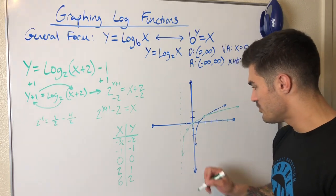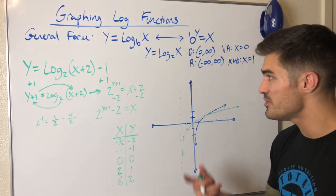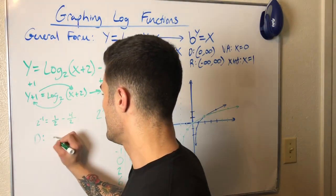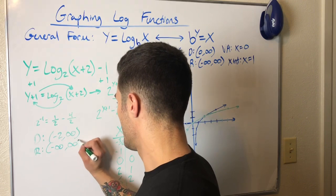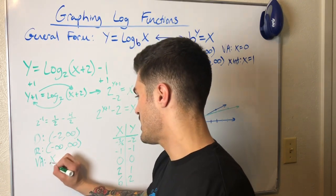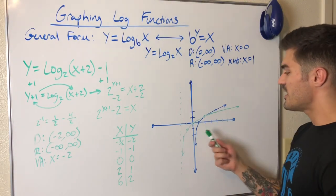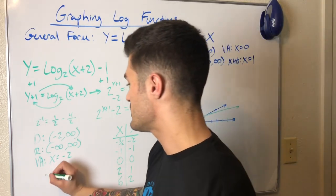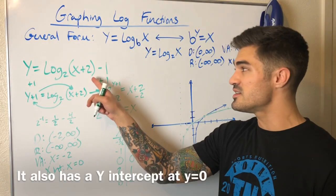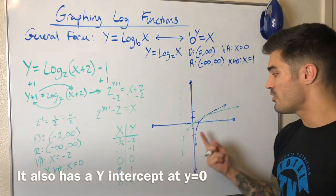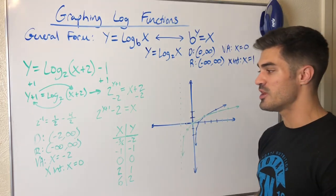Let's write out the key information for this function. The domain has changed: instead of zero to infinity, it's now negative two to infinity, because of the horizontal shift. The range is still negative infinity to positive infinity — that hasn't changed. The vertical asymptote is at x equals negative two. The x-intercept has shifted too: the vertical shift down also affects the x-intercept, so it is now at x equals zero rather than x equals negative one.